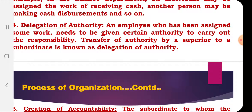The next step is delegation of authority. An employee who has been assigned some work should be given the authority to perform that task without any hindrances. The authority needs to be transferred from the superior to the subordinate — this is known as delegation of authority. For example, if a salesman needs to cover a particular region, he should have the authority to withdraw money so he can travel from one place to another.